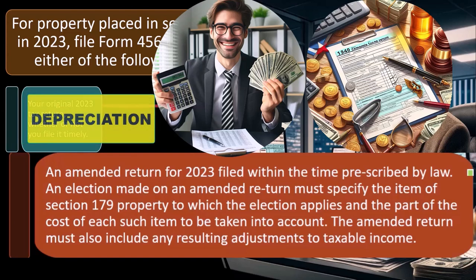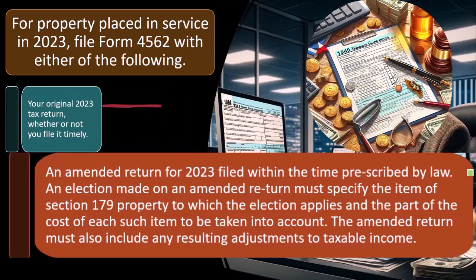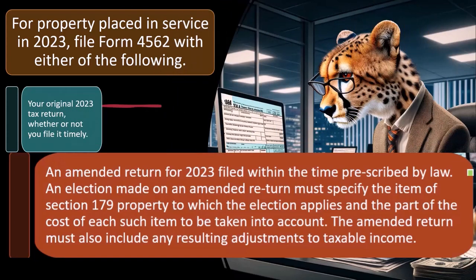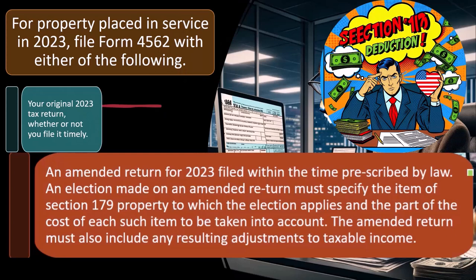So you're kind of locked into it. If you're taking MACRS depreciation half-year convention and you took a Section 179 deduction, then you're basically locked into it for the life of the depreciable property. It's going to be depreciated the same way, because we need consistency typically for accounting, which is reflected in the tax code.